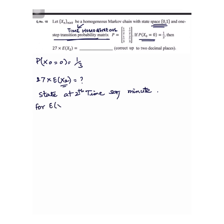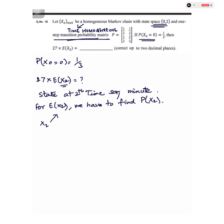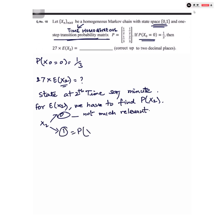In order to find the expectation of X₂, we need to find P(X₂). Now X₂ can take two values, 0 and 1. The value 0 doesn't have much relevance because 0 times the probability will give us 0 only. So what we are more interested in is finding P(X₂ = 1).